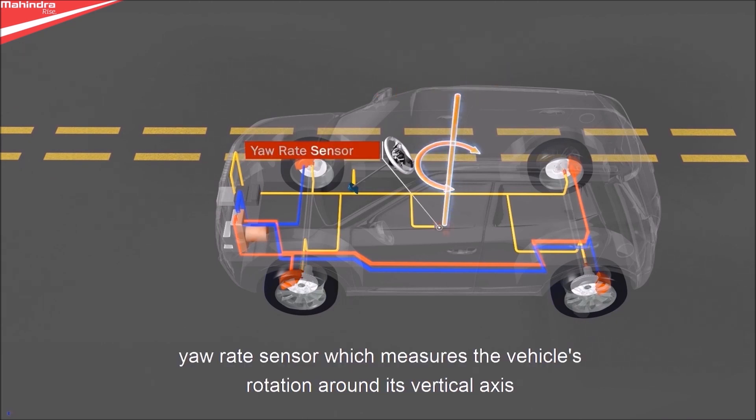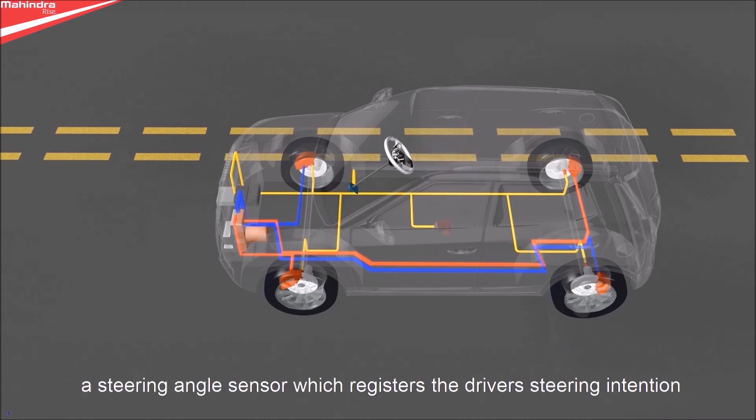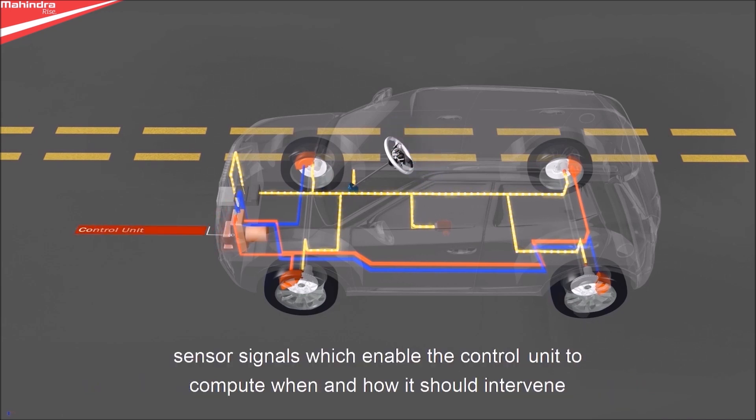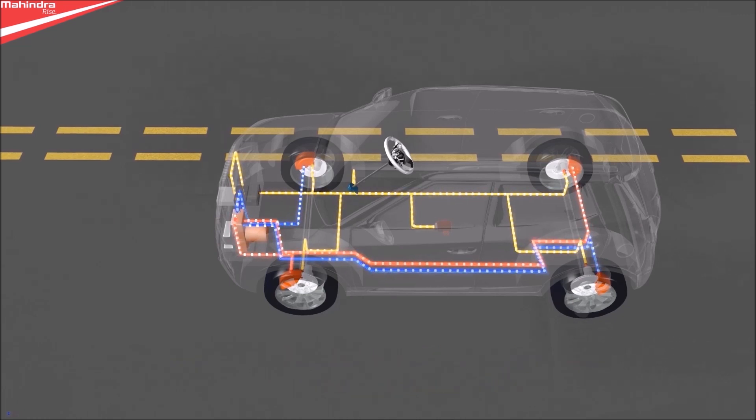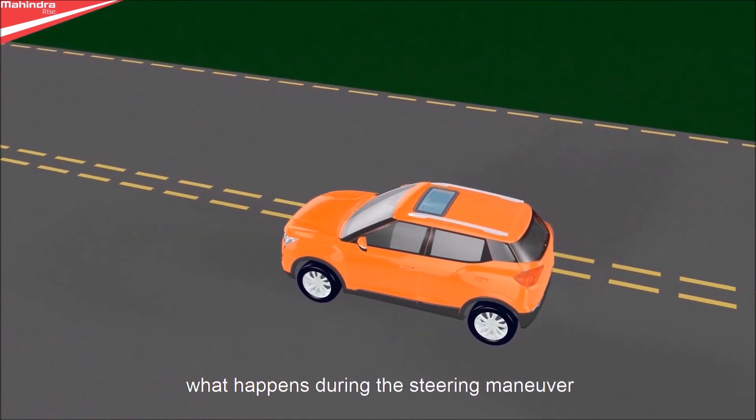ESP comprises speed sensors on each wheel, a yaw rate sensor which measures the vehicle's rotation around its vertical axis, a steering angle sensor which registers the driver's steering intention, sensor signals which enable the control unit to compute when and how it should intervene, and a hydraulic unit which builds up and reduces braking pressure on the brakes.